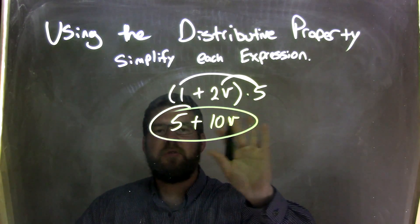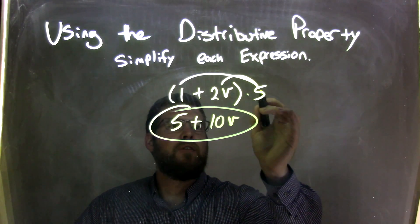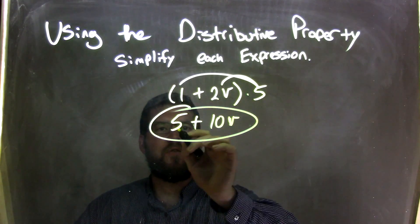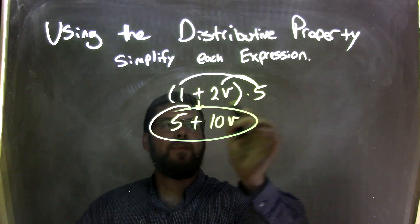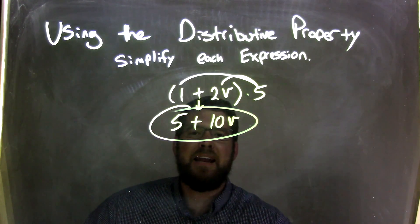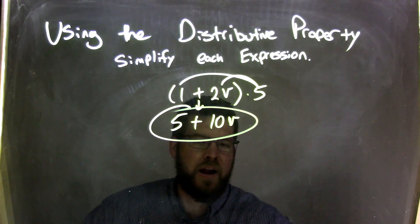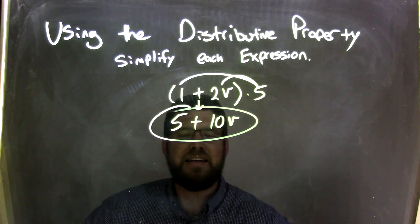Not like terms inside of the parentheses, cannot combine them. So we took them times 5 on the outside, distributed that. 5 times 1 is 5. Brought down that plus sign here. 5 times 2V is 10V. And now our final answer, because we cannot combine these two, because they're not like terms, is 5 plus 10V.